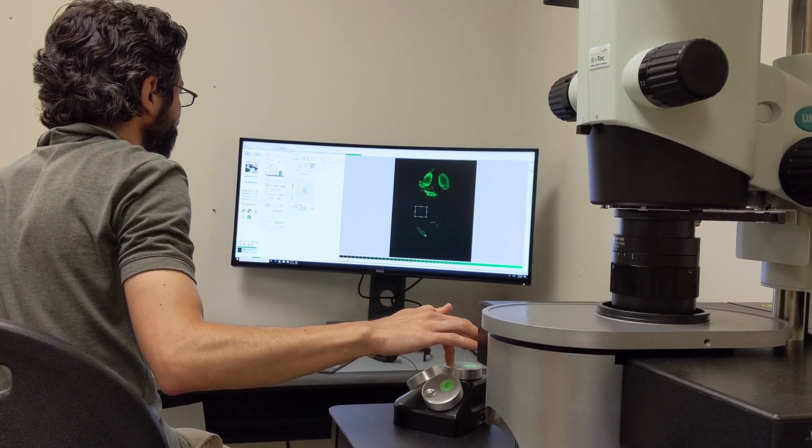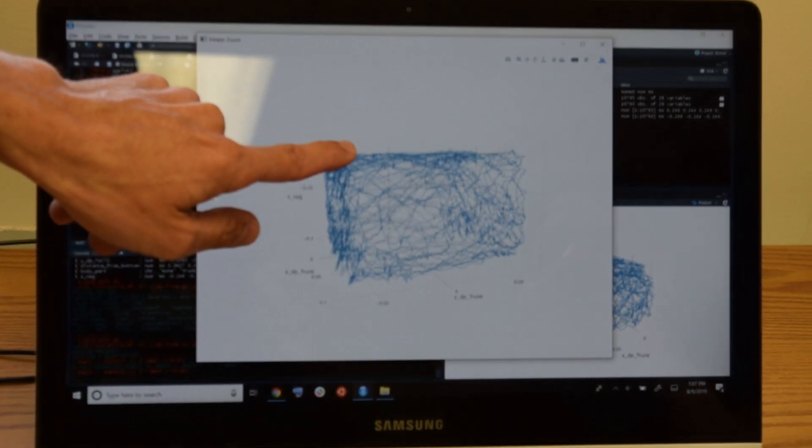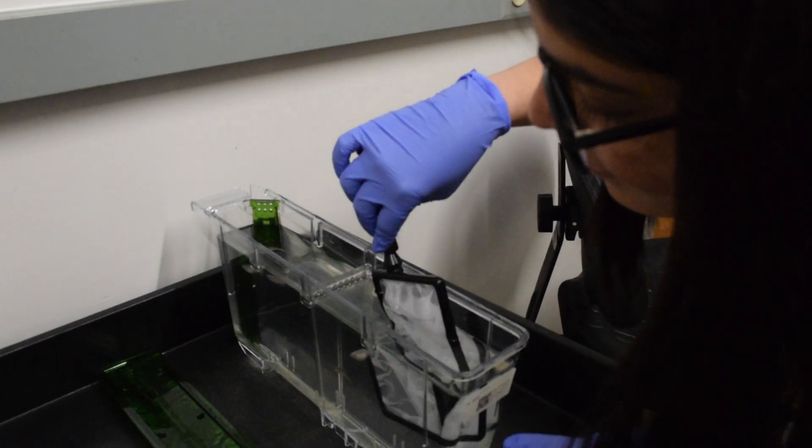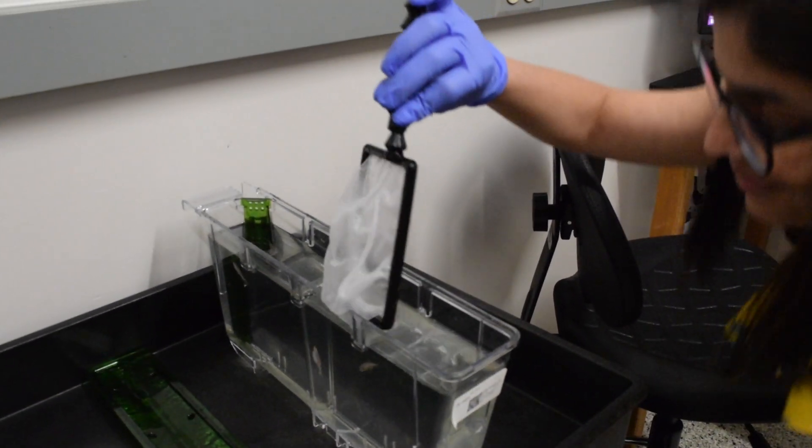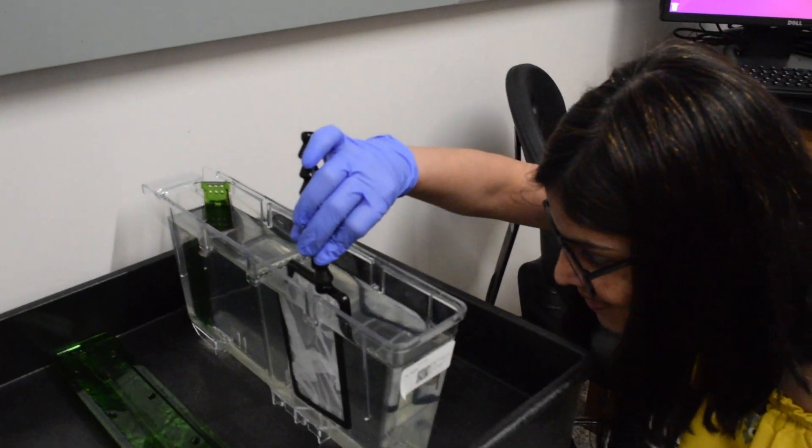We study the molecular basis of behavior and whole brain network function to look at how genes and proteins and things in cells affect the behavior of our animals and how it affects the ability of the different parts of the brain to interact with each other.